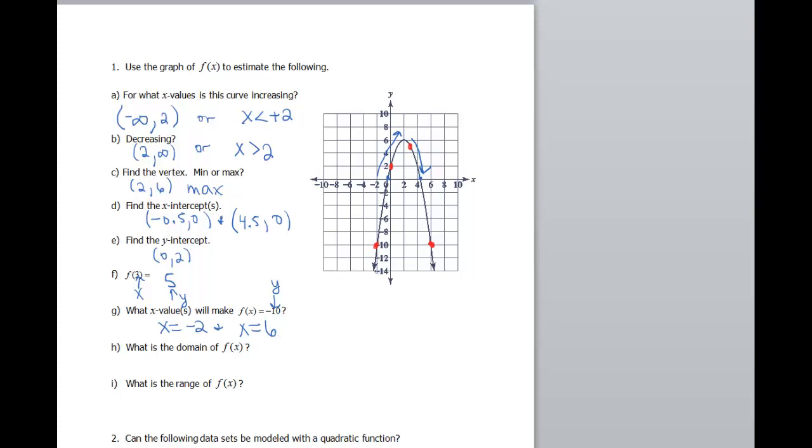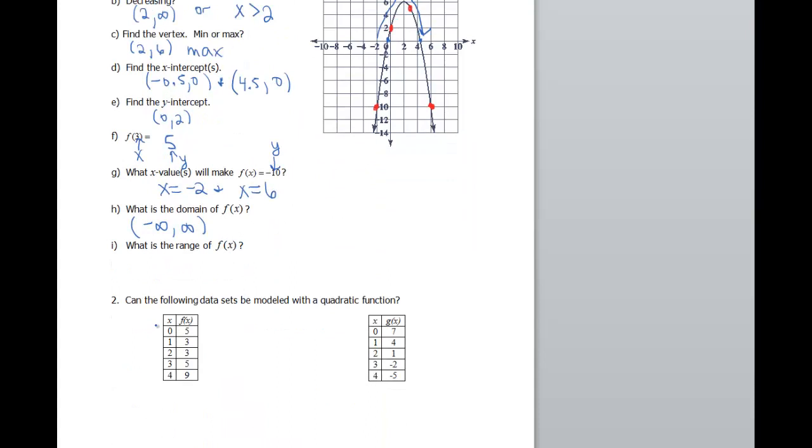What is the domain? So again, we talked about these arrows. That means it's gonna go forever in both directions. So negative infinity to infinity. What is the range? My vertex is at the top. So it's gonna be everything below what my y-value is here, which is 6. So I'm gonna say negative infinity to 6, or you can also say y is less than or equal to 6.